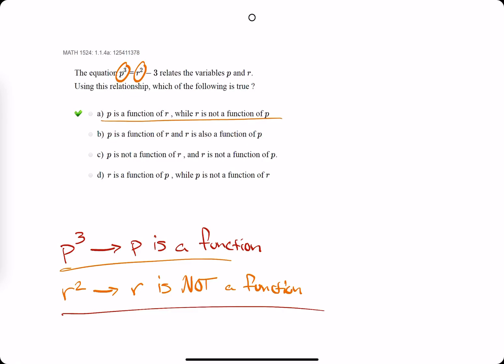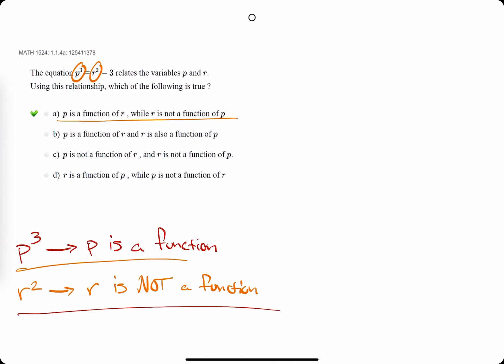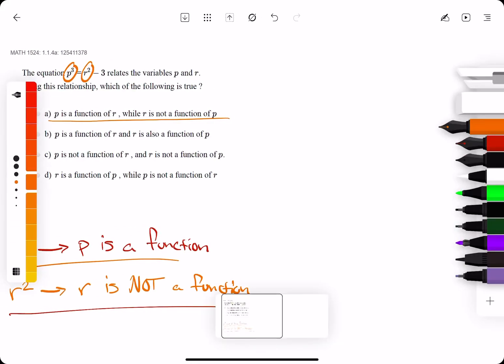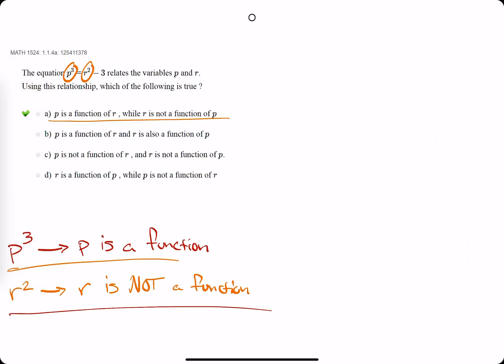But in this video I'm going to talk about why. So I'm going to start with the r situation. So r squared indicating that r is not a function of p.